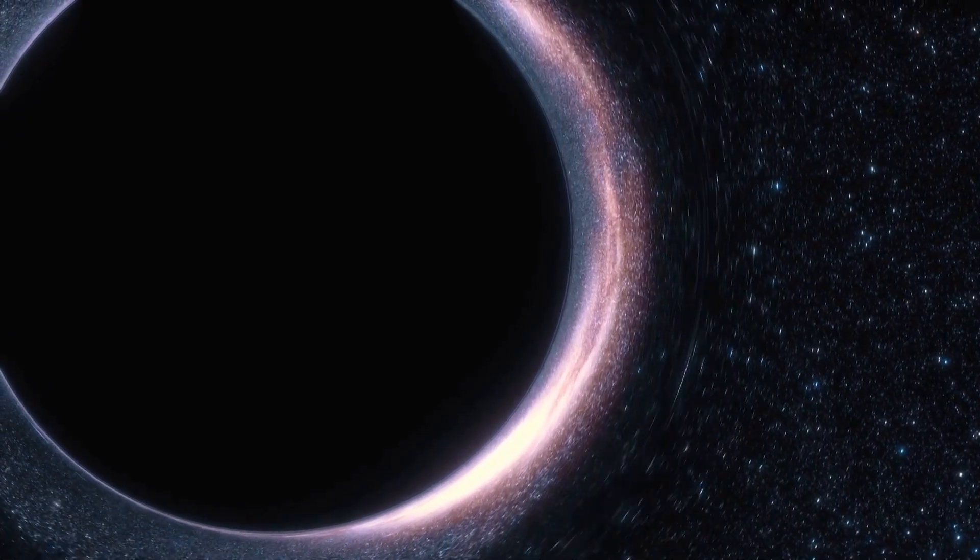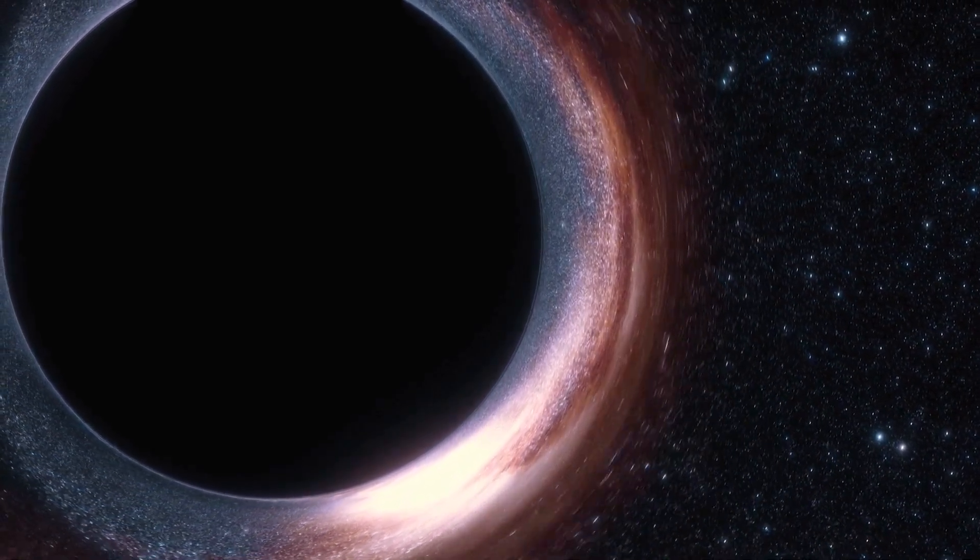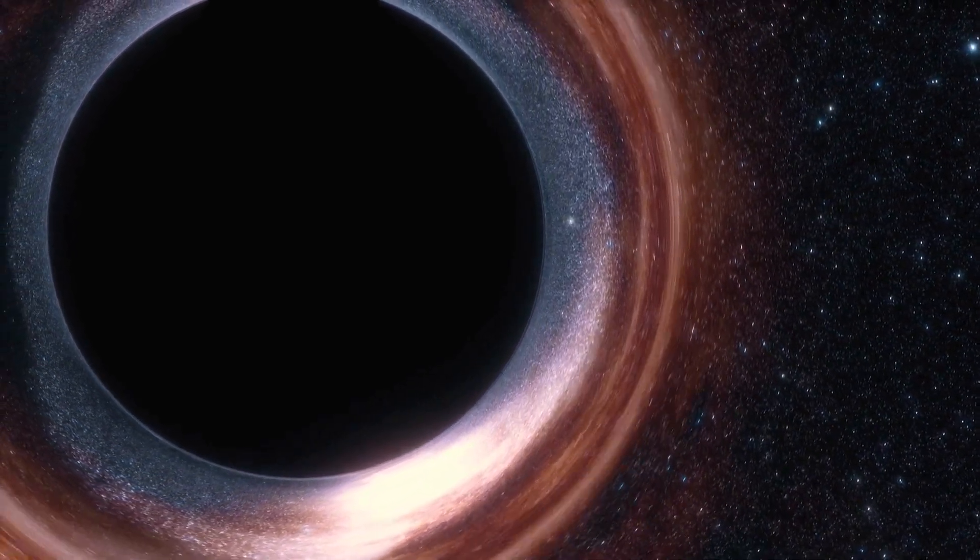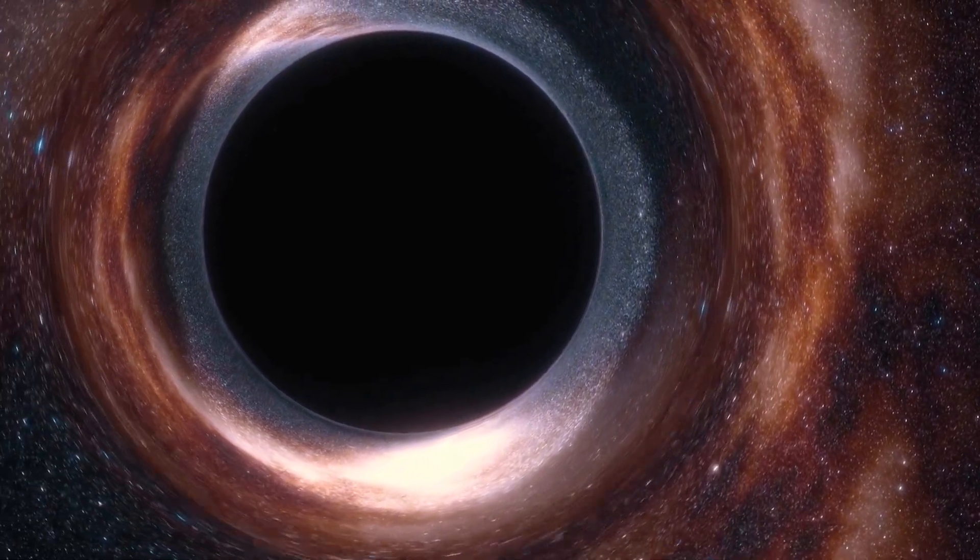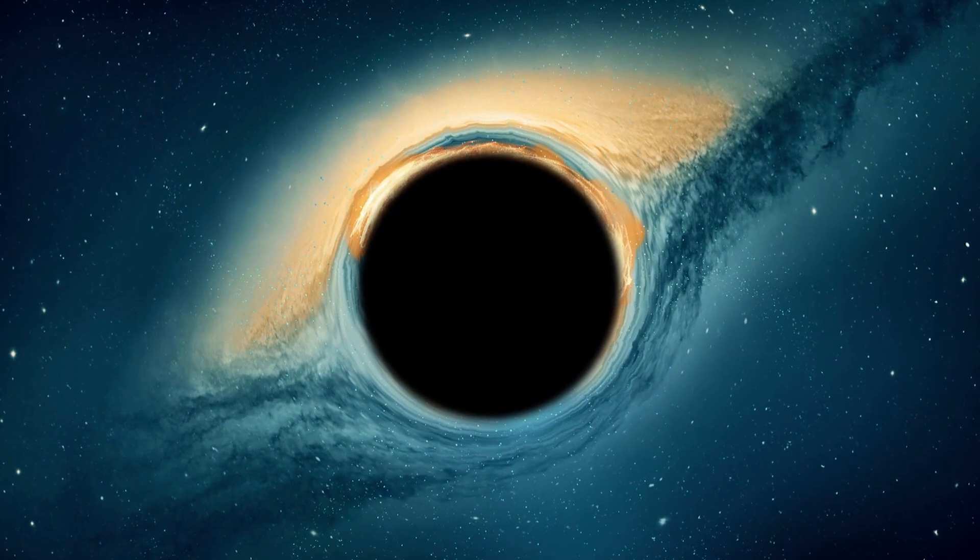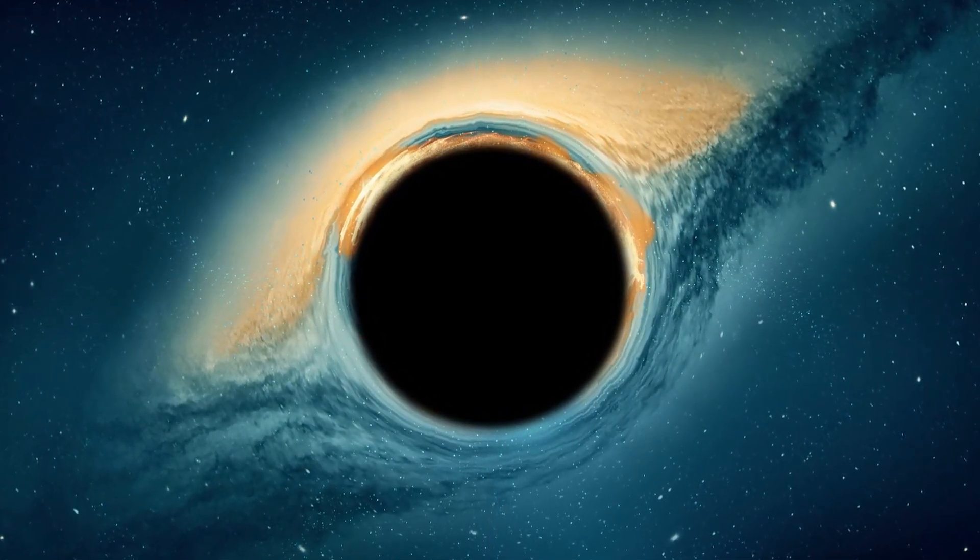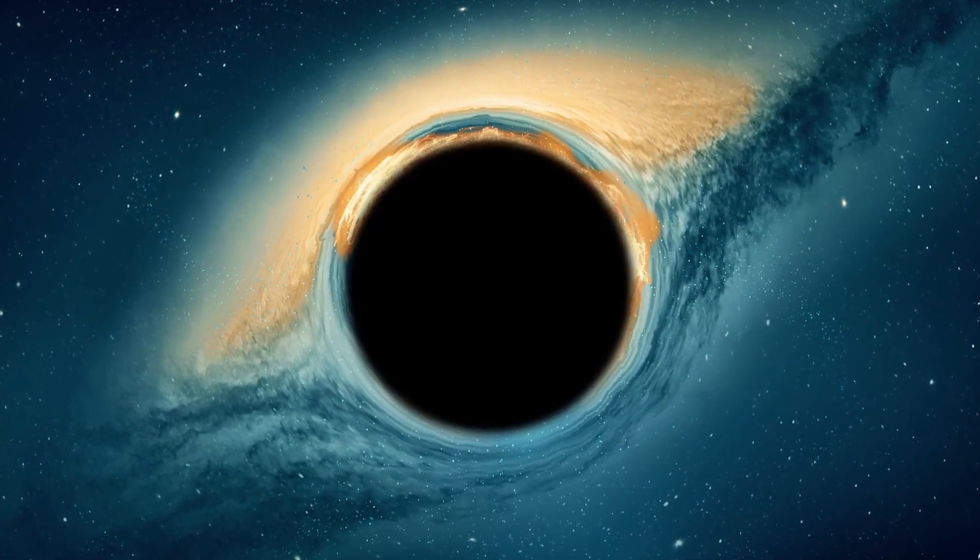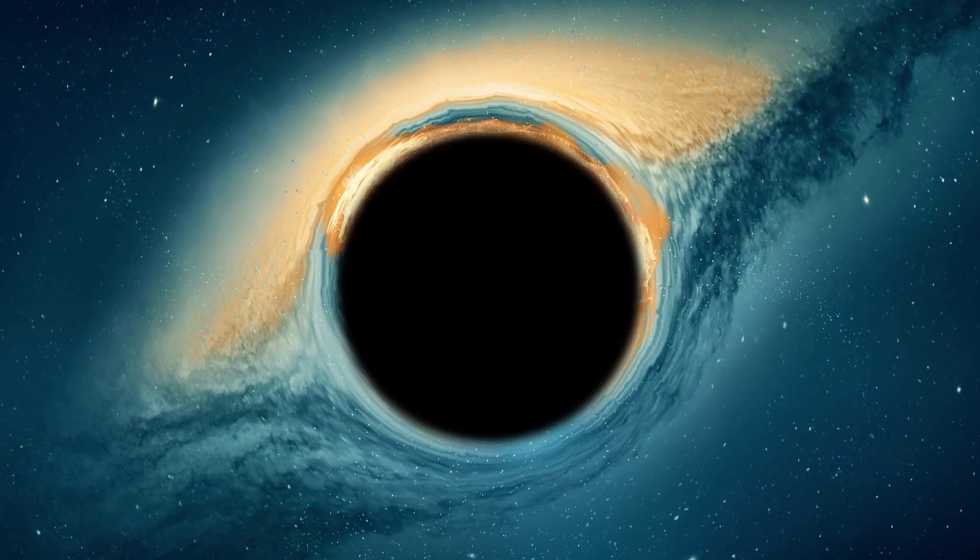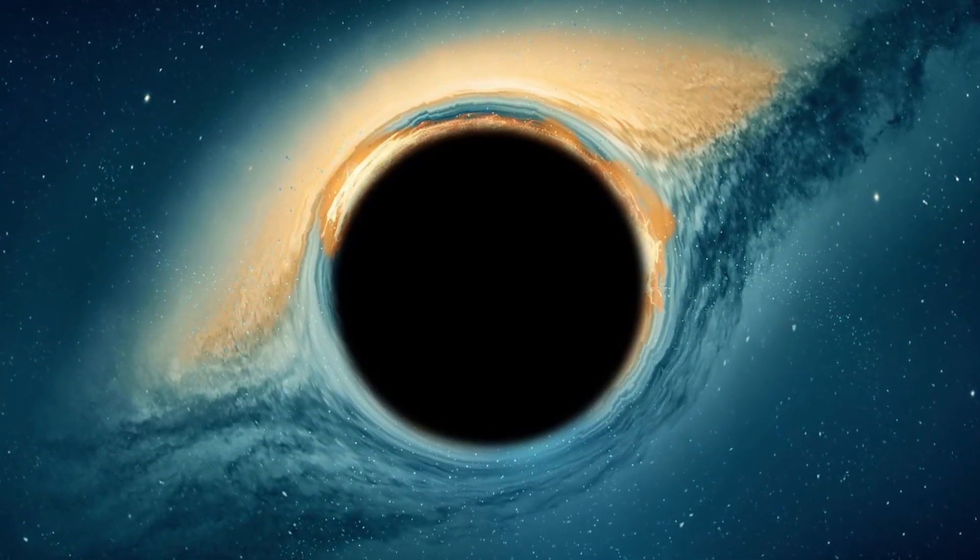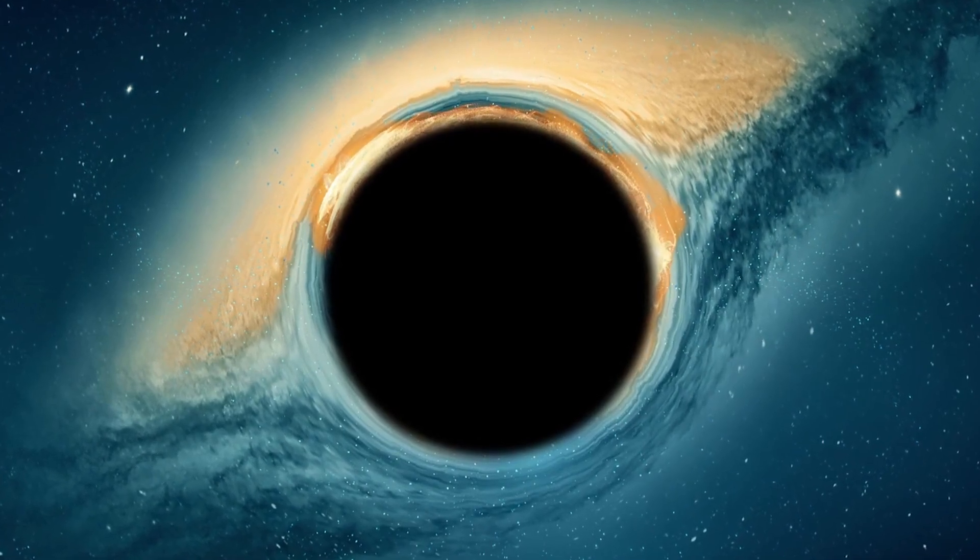They were witnessing a phenomenon known as light echoes. As we well know, black holes possess extremely powerful gravitational force that even light cannot escape. However, in the vicinity of a black hole, one often finds a spinning disk of material, such as gas or dust, concentrated by its immense gravity. This material heats up as it spirals towards the black hole, emitting X-rays and other types of radiation, creating a luminous ring known as a corona.